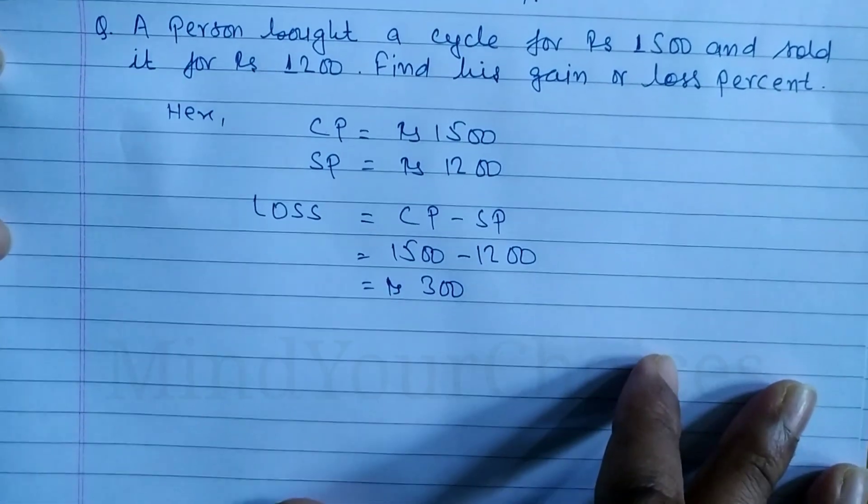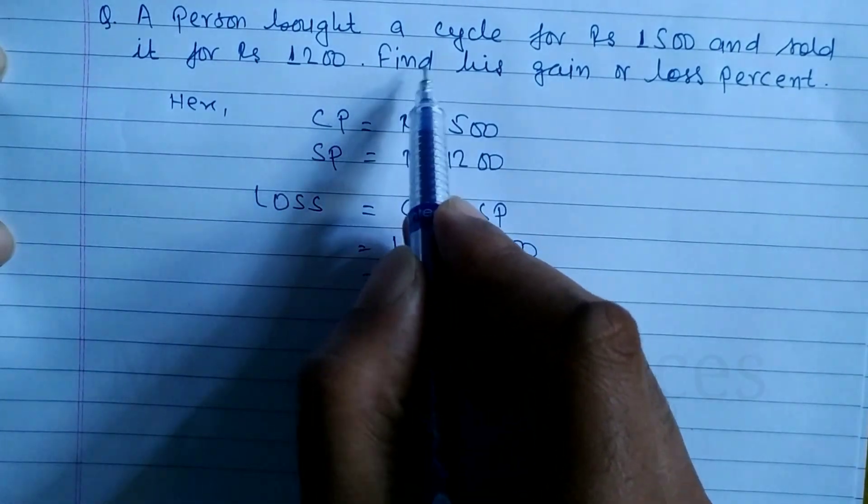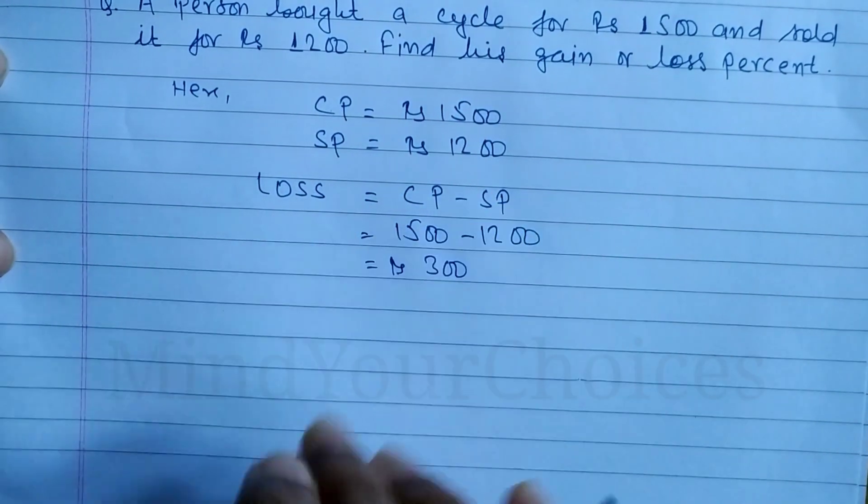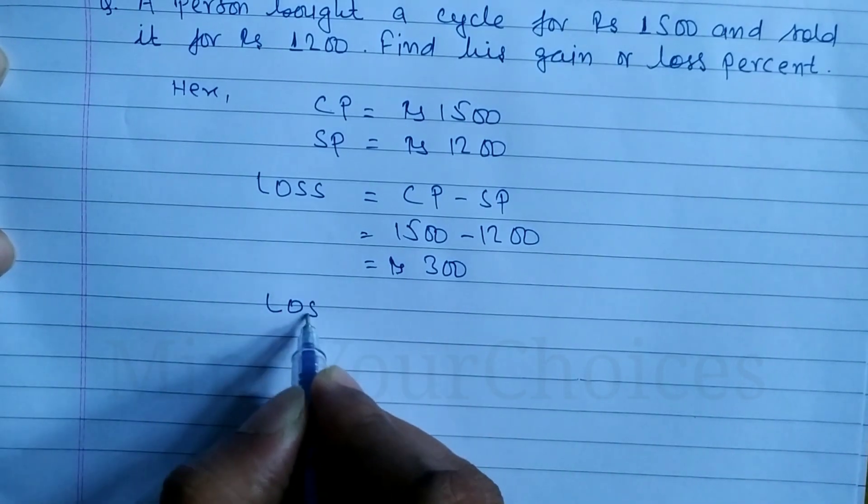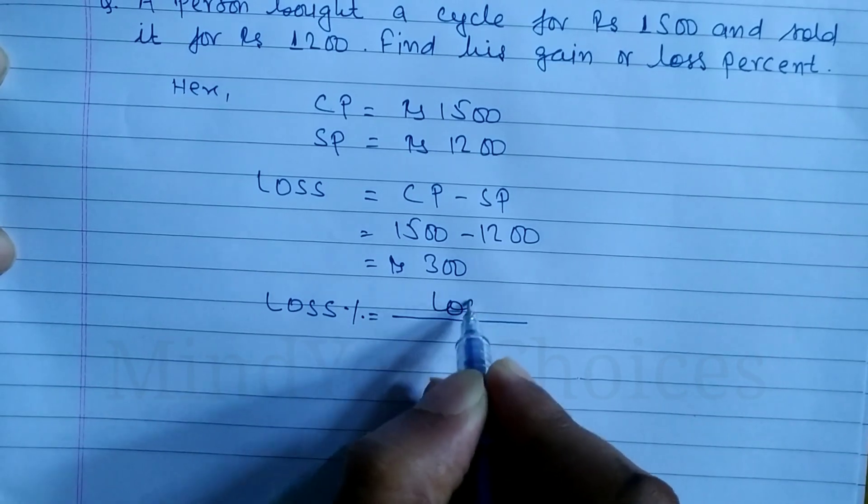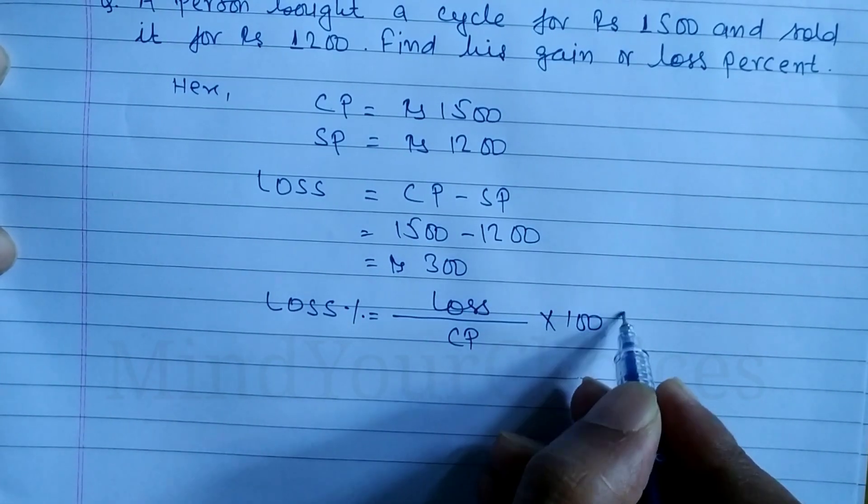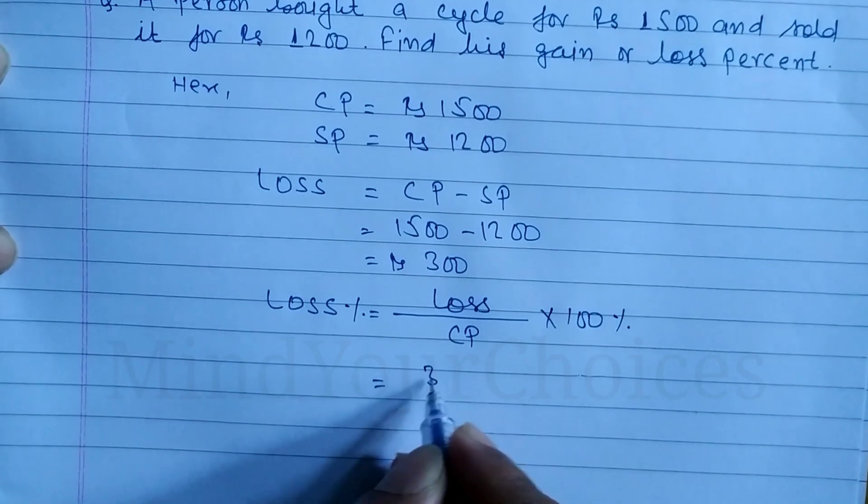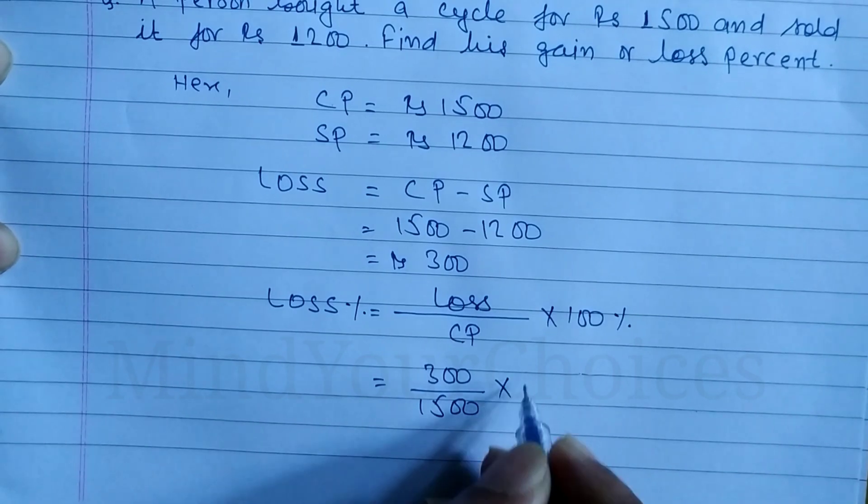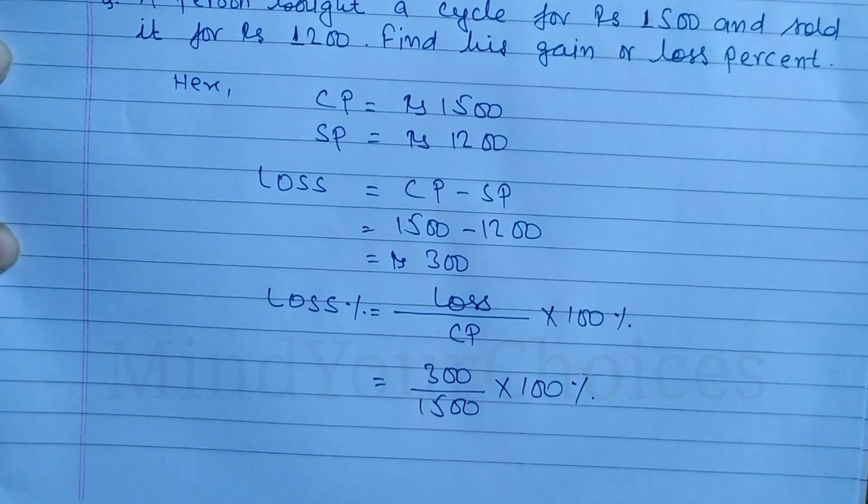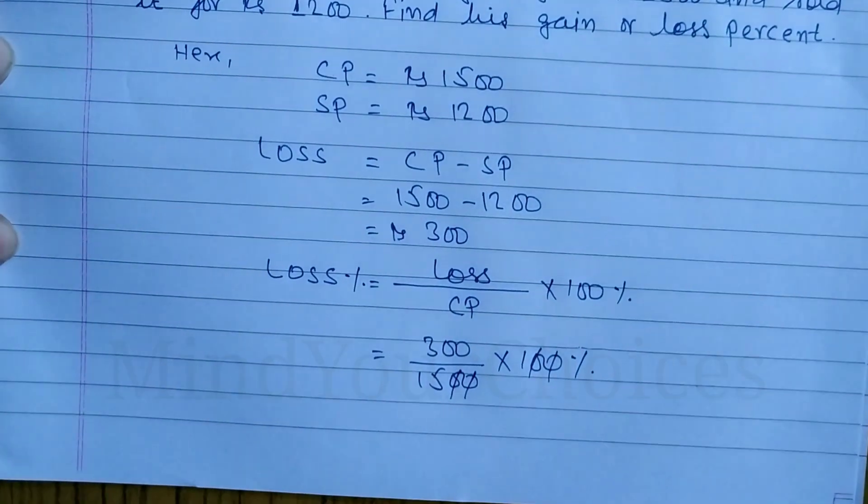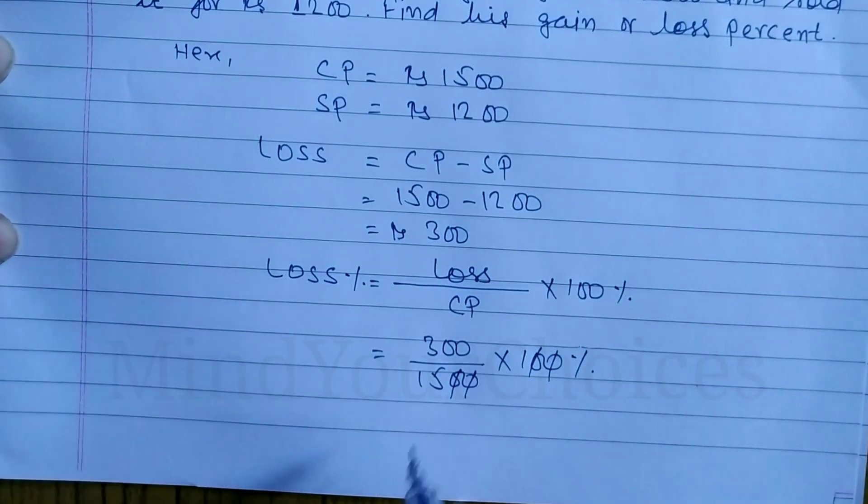300 loss. Now what we have to do, the question says find his gain or loss percent. Since there is loss, we use loss percent formula. Loss percent formula is loss by CP into 100 percent. Loss is equal to 300 divided by CP, cost price is 1500 into 100 percent. Cancel the zeros, divide this, the answer is 20 percent.